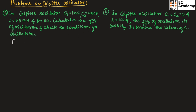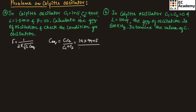We can find the frequency of oscillation by using the formula F = 1 / (2π √(L × C_eq)). Here, C equivalence for Colpitt's oscillator is equal to (C1 × C2) / (C1 + C2). Substituting the values, we get (1 nanofarad × 99 nanofarad) / (1 + 99 nanofarad), so C equivalence equals 0.99 nanofarad.